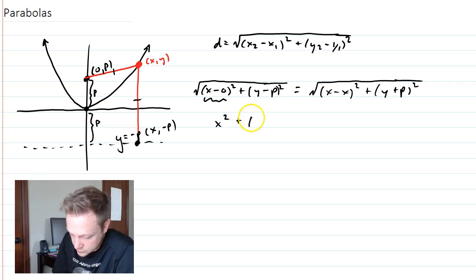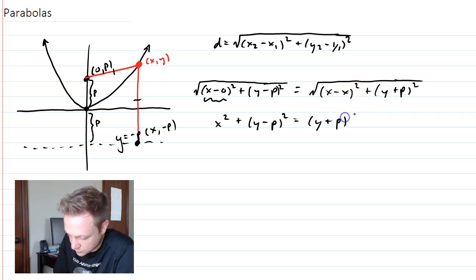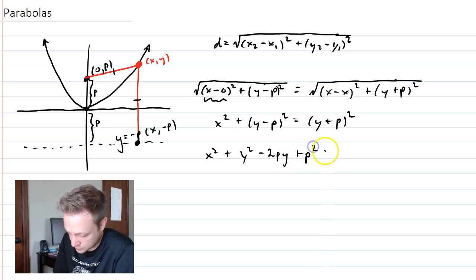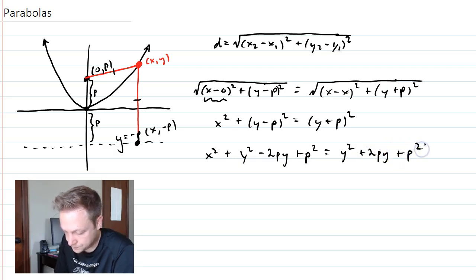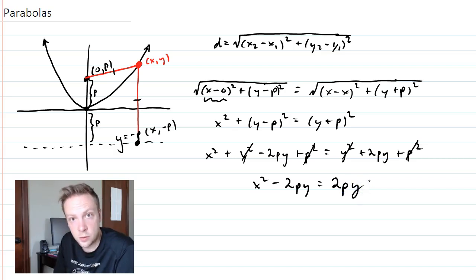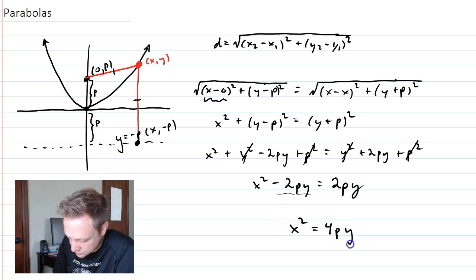Squaring both sides, the left side gives x² + (y − p)², and the right side gives (y + p)². Expanding by FOIL: left side is x² + y² − 2py + p², right side is y² + 2py + p². We can cancel y² and p² from both sides, leaving x² − 2py = 2py. Adding 2py to both sides gives x² = 4py.